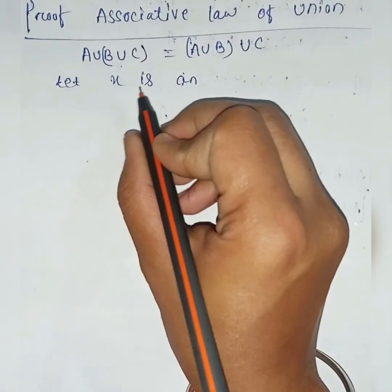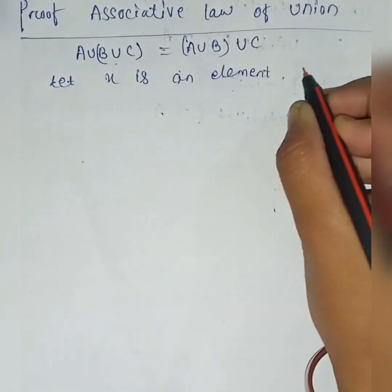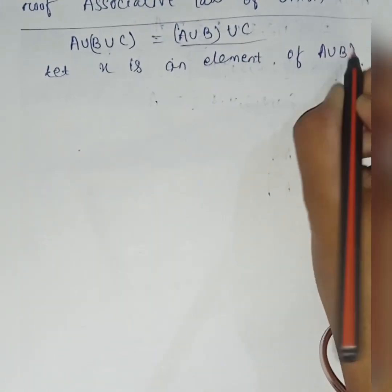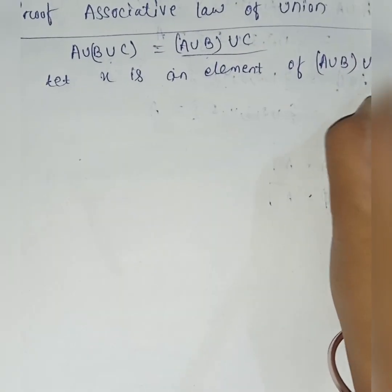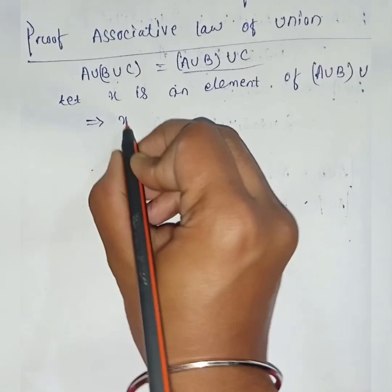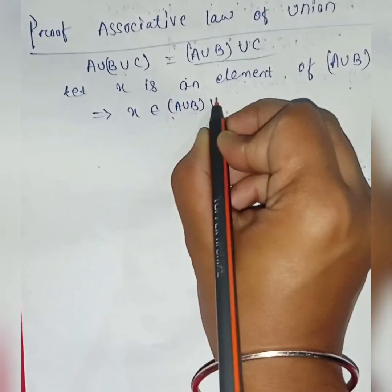Let x is an element of A union B union C. That implies x belongs to A union B union C.